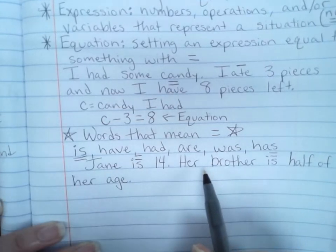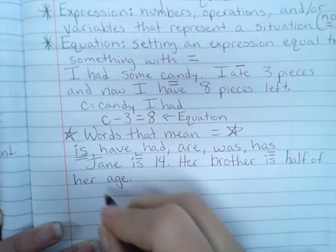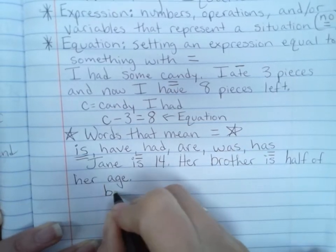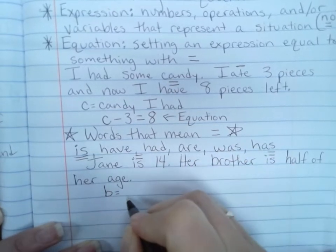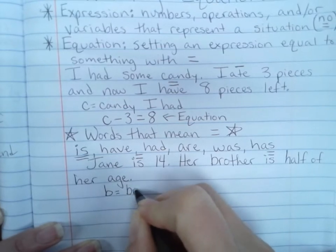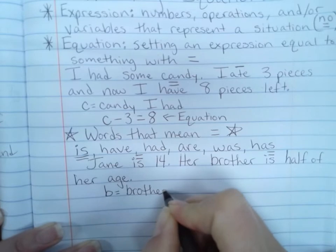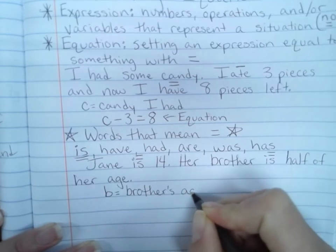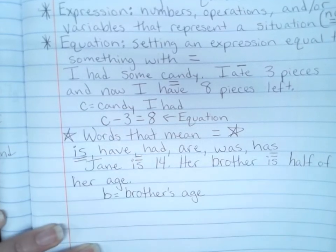Do we know her brother's age? No, there would be our unknown. So I'm going to define my variable. I'm going to say B is brother's age. Okay.